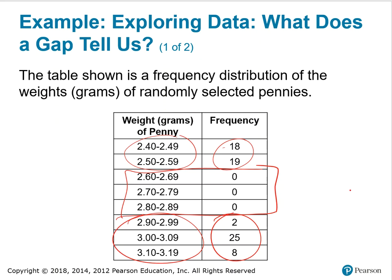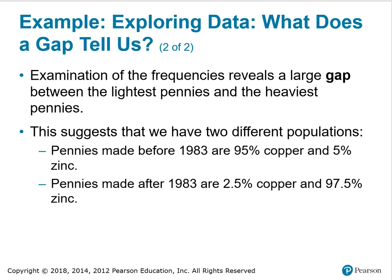So, what could be a possible reason for such a gap in the data? Examination of the frequencies reveals that the large gap is between the lightest pennies and the heaviest pennies. It may suggest two different populations — maybe pennies made before 1983 are 95% copper and 5% zinc, compared to pennies made after 1983, which have a different composition of elements. That could be the reason for the gaps, since the zinc content was much higher in later years.